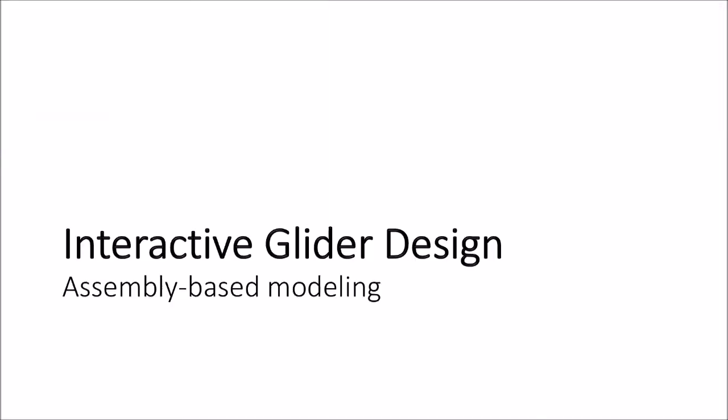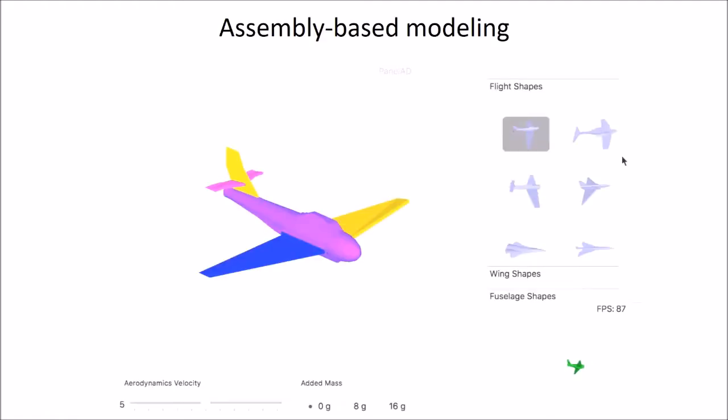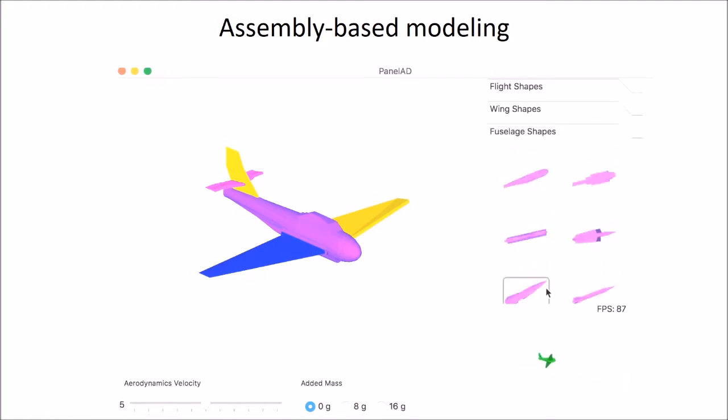We proposed an interactive flight design interface based on our simulation approach. Our design interface consists of three different categories of assembly parts. The user can select flight shapes, wing shapes, and fuselages. In the simulation window,